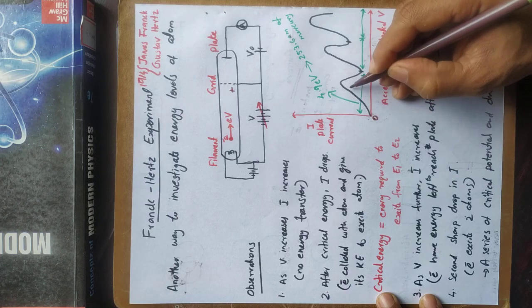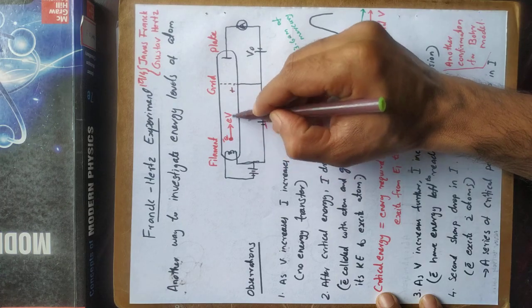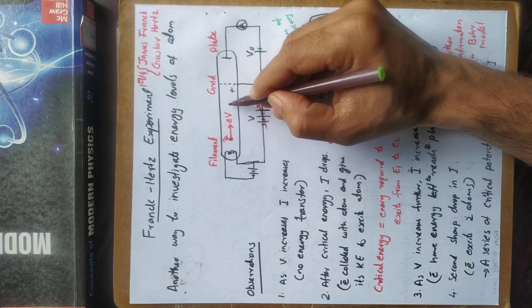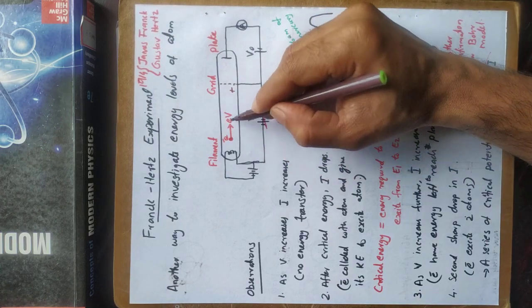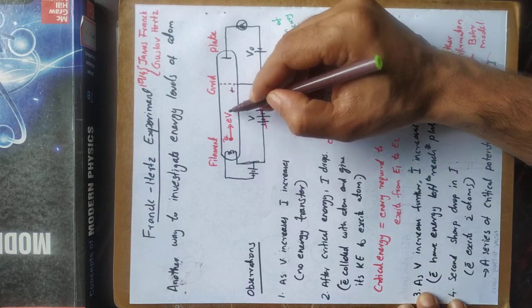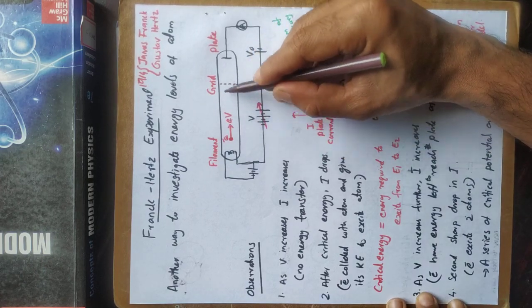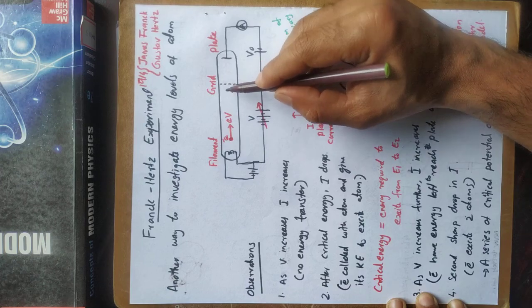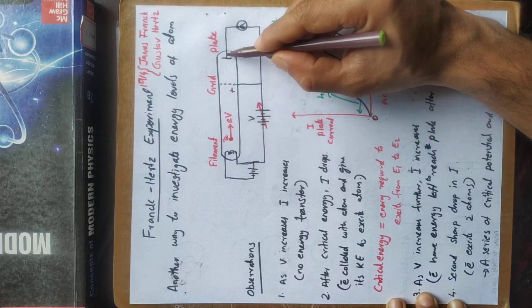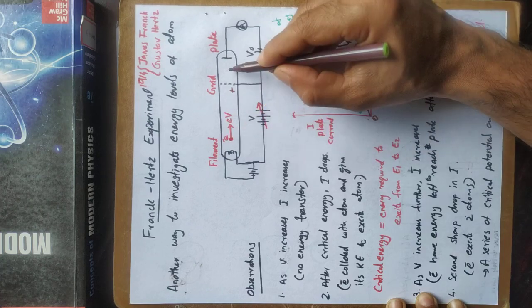There is a reason for this. The electrons collide with mercury atoms. These collisions are elastic — there is no energy transfer from the electron to the atom. The kinetic energy is preserved.